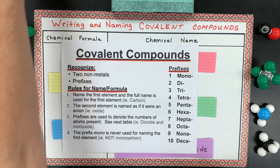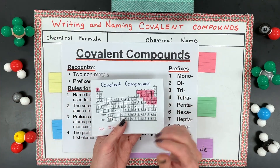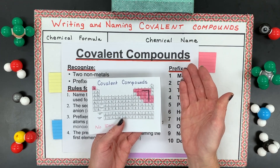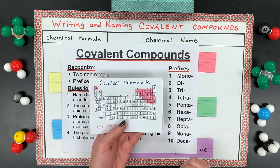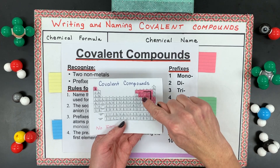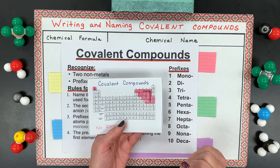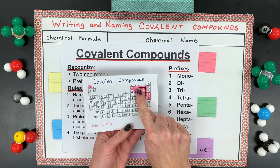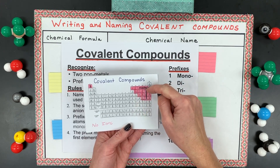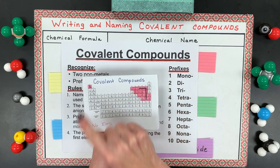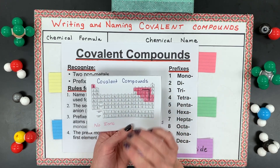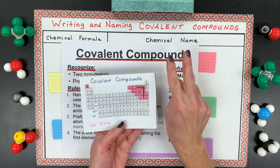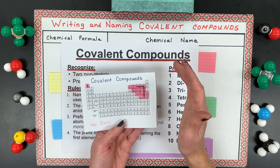You also need to recognize what kind of atoms bond to make covalent compounds — they are the non-metals on the periodic table, and also a few metalloids. However, the diatomic seven elements — nitrogen, oxygen, fluorine, chlorine, bromine, iodine, and hydrogen — are not compounds. They are made up of only two atoms of the same type, so they're just named as elements.